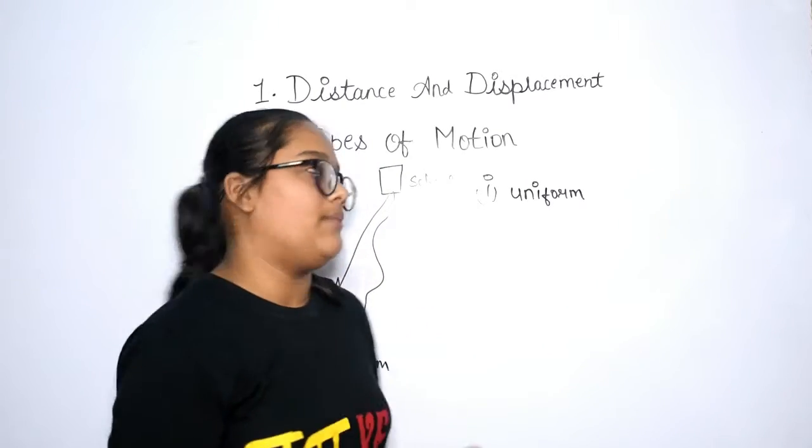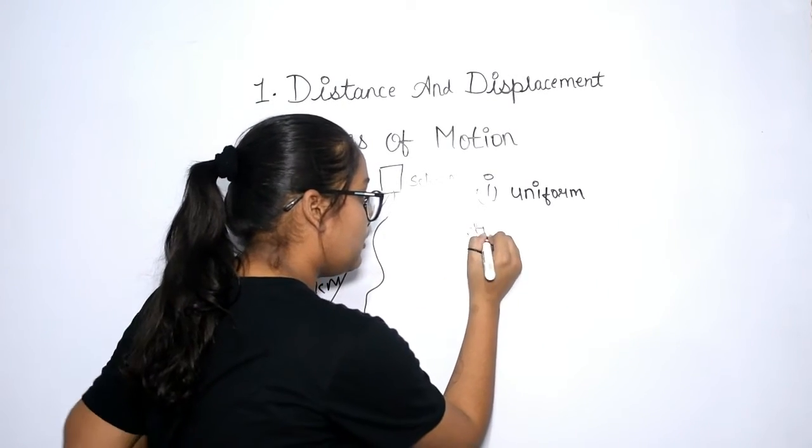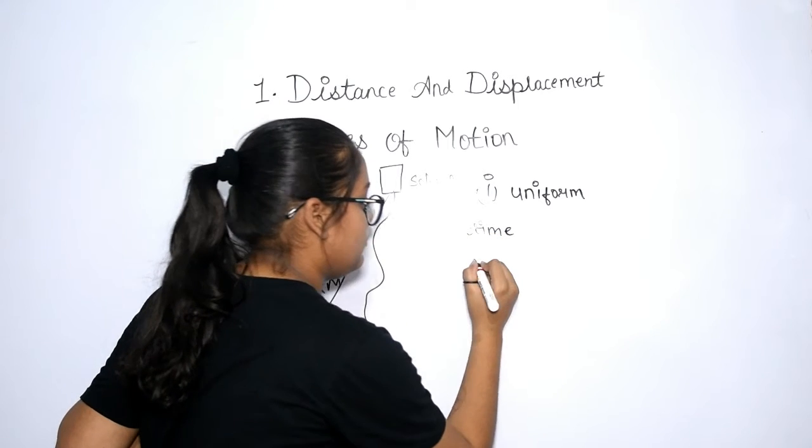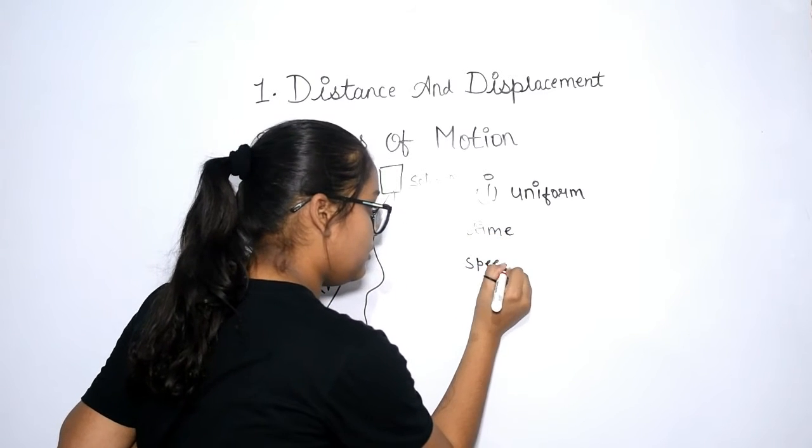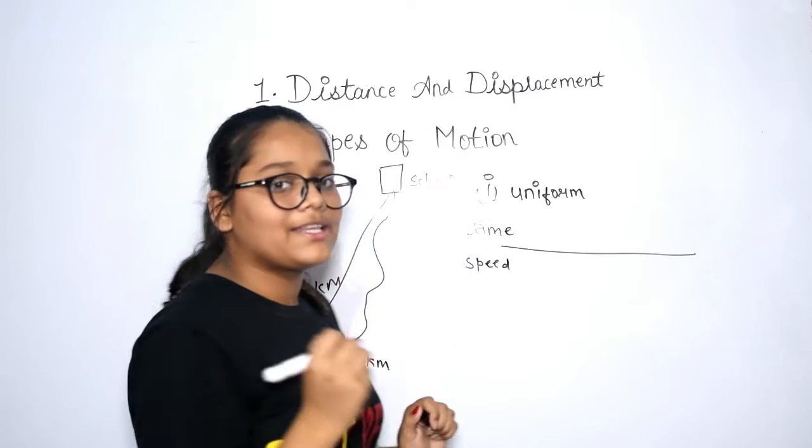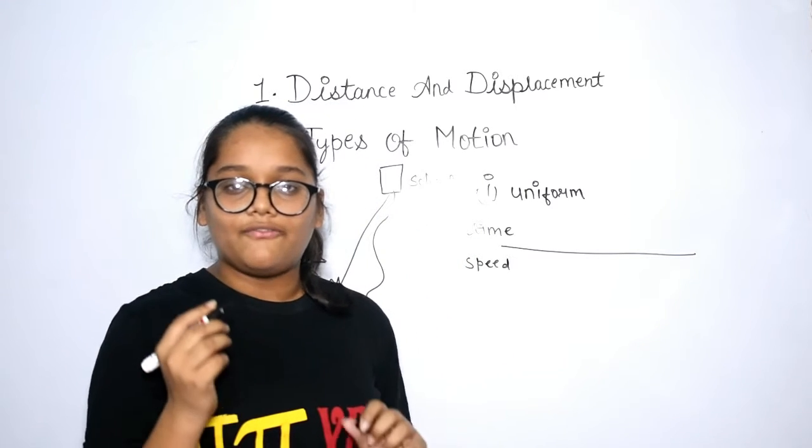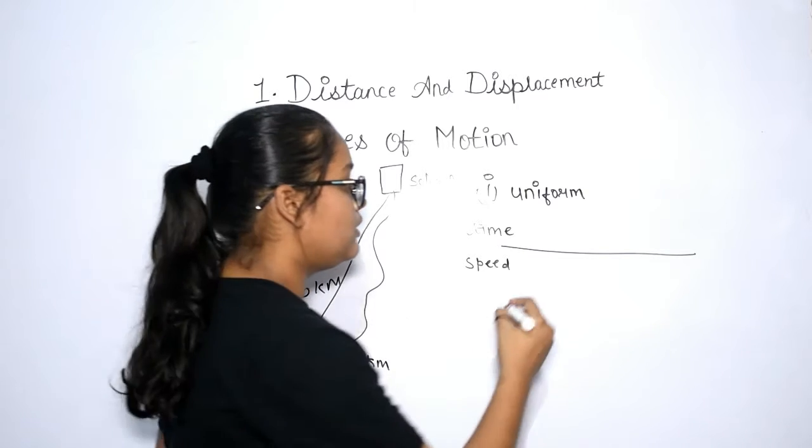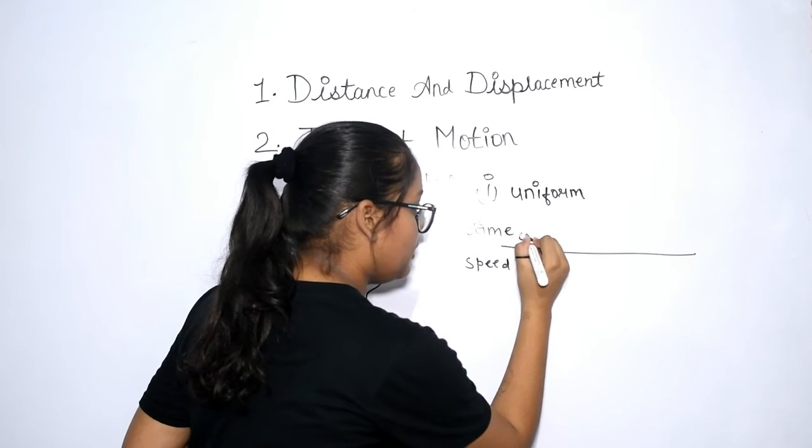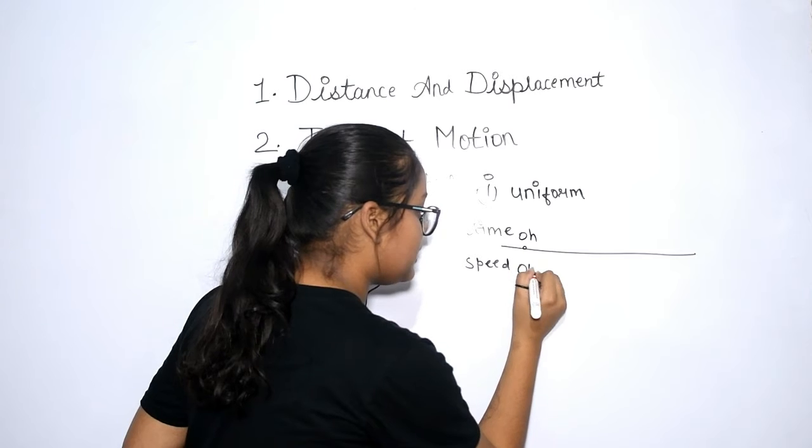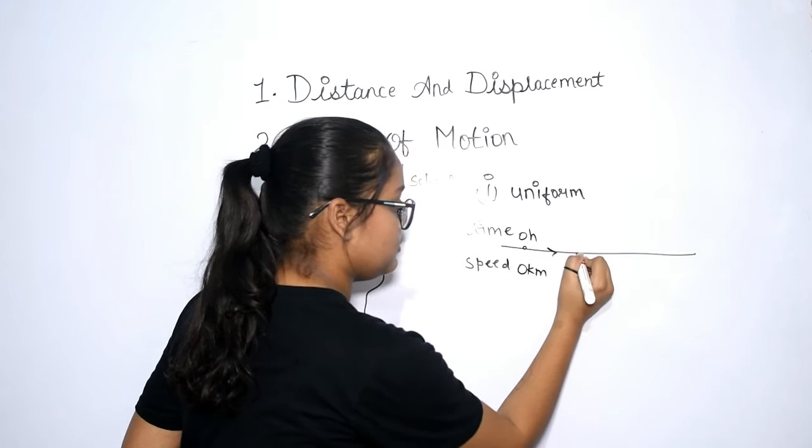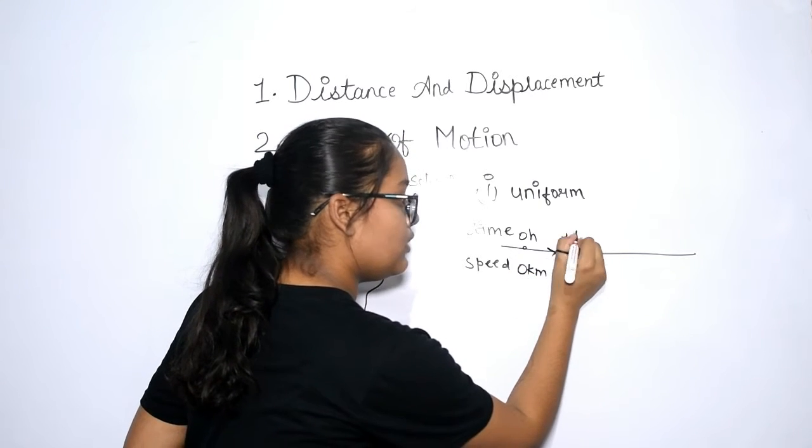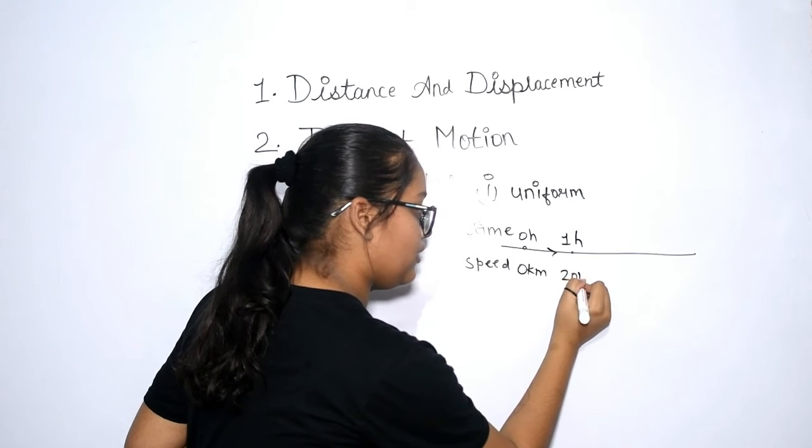Let's take an example. It is time and it is speed. We are taking example of vehicle. A vehicle is running at a constant speed of 20 km per hour. So, 0 hour is equal to 0 km.